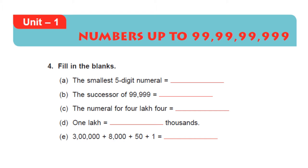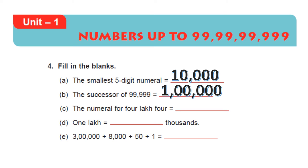I have to fill in the blanks. The first question is: the smallest 5-digit numeral. First you put 1, because it is the smallest 1-digit number. Then, what is 1 minus 5? It is 4. Then add 4 zeros. The successor of 99,999 is easy — just add 1. That is 1 lakh.